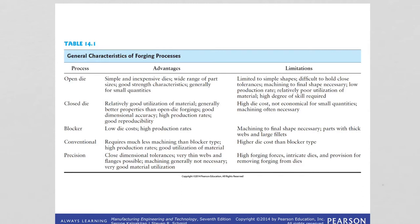This table summarizes different types of forging processes we're going to learn about: open die forging, closed die forging, precision forging, etc. Their advantages and limitations are summarized here. Let's now look at these processes in more detail.